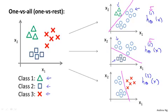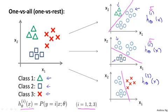So to summarize, what we've done is we fit three classifiers, so for i equals 1, 2, 3, we fit a classifier h superscript i subscript theta of x that's trying to estimate what is the probability that y is equal to class i, given x and parameterized by theta.